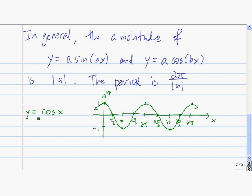So for y equals cosine of x, the period is 2π, so it takes 2π units to complete one full cycle, and the amplitude is equal to 1.